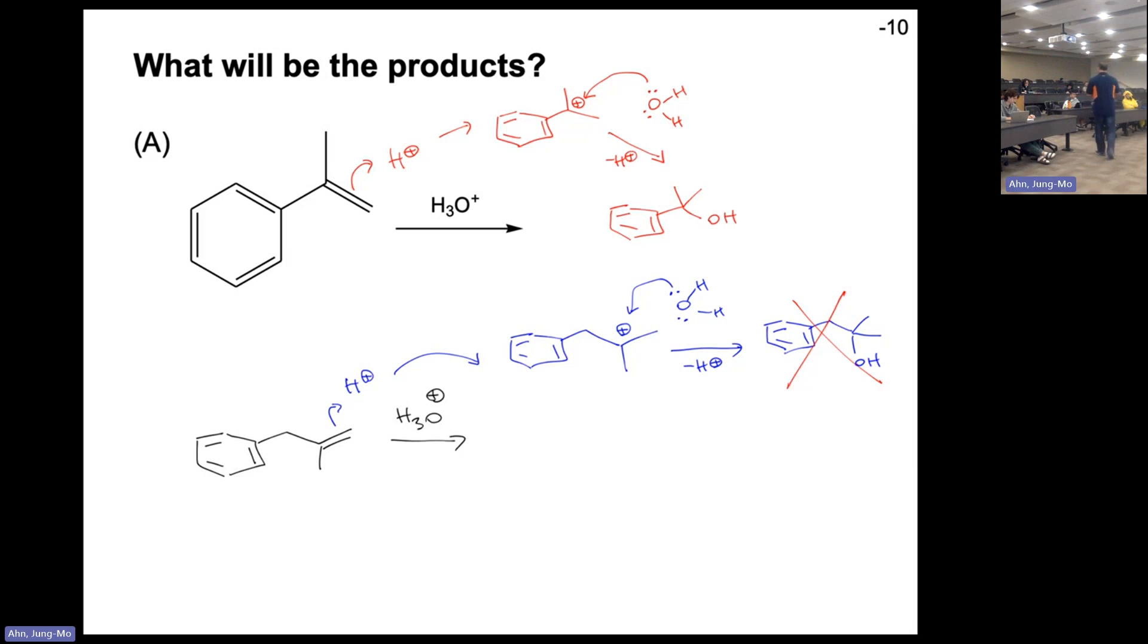This is a tertiary carbocation. I know it's pretty stable, but the thing is, think about the next position. If this hydrogen moves out, then you're going to get a carbocation right next to benzene. And then what it does is it's going to make a lot of vaginal structure. So this is a secondary carbocation, but because it's next to benzene, that becomes more stable. Resonance stabilization - that's the key for making this rearrangement possible.